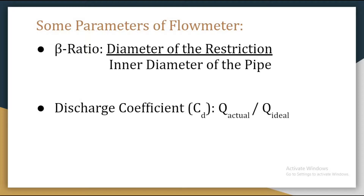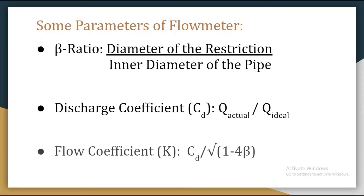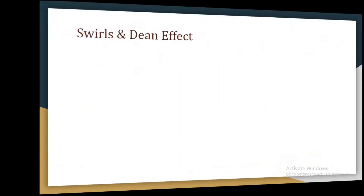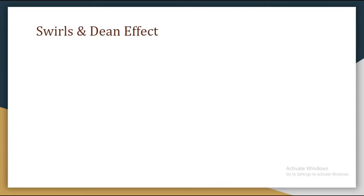The next parameter is discharge coefficient. Discharge coefficient is the ratio between actual volumetric flow rate and the ideal volumetric flow rate. The higher the discharge coefficient of a flow meter, the better it is, because it is closer to the ideal flow rate. The next one is flow coefficient, given by k equals cd divided by the square root of (1 minus beta to the power 4). If we know the discharge coefficient and beta ratio, we can easily find the flow coefficient.